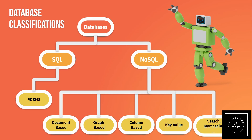If we use a database for one specific use case, that is the efficiency. For example, a search database is for logging — system and server logs. In a second, there can be 10,000 lines, and over time, around 1 billion lines. So for search and query, we design search databases.